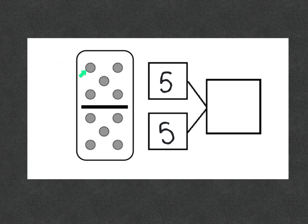Next up, we have a domino. We have three, four, five, six, seven, eight, nine, ten dots total in the entire domino. So five plus five will equal ten.